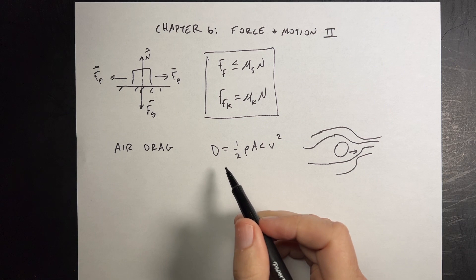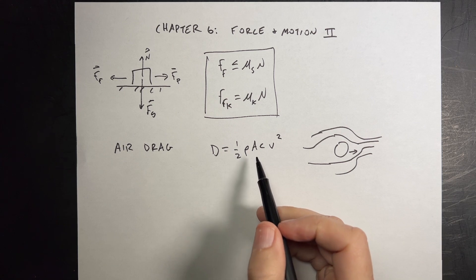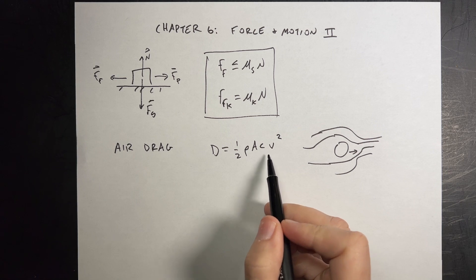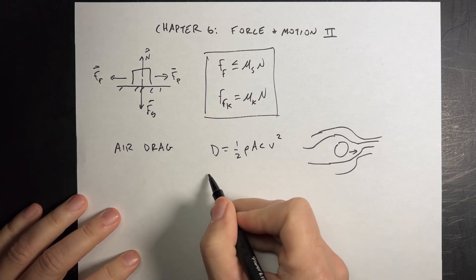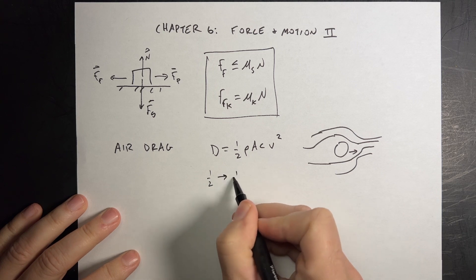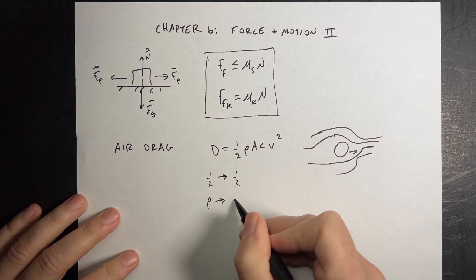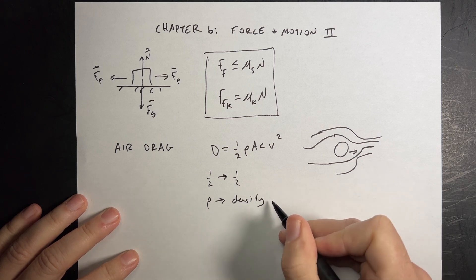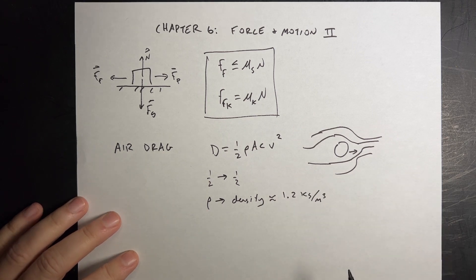And this again is also a model. This is a model for, we call this low density air. Typically if it's viscous like an oil, it's usually proportional to the velocity, not the velocity squared. But in this model, one half is one half. That's just a joke. Rho is the density of air or the fluid. And it's around 1.2 kilograms per cubic meter. You don't need to memorize that. I'm just telling you that.